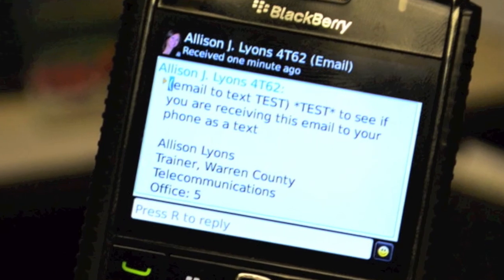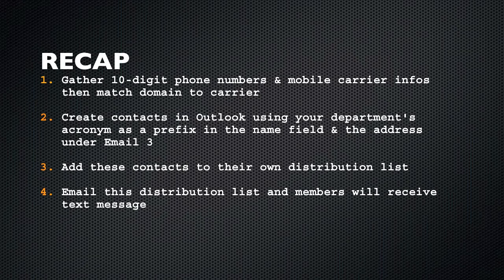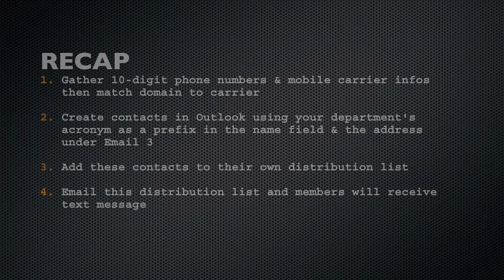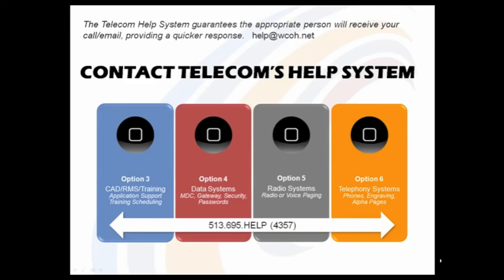So the final recap of the four steps: gather the 10-digit numbers and carrier info from your members; create contacts in Outlook using the two tips of department acronym and email three; add these contacts to a distribution list; then send your email and ensure they receive it as a text message. To receive the carrier list or for other questions, please contact Telecom's CAD RMS division or trainer at 513-695-HELP option three, or you can email a help ticket to help@wcoh.net.